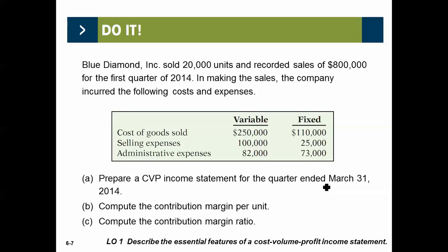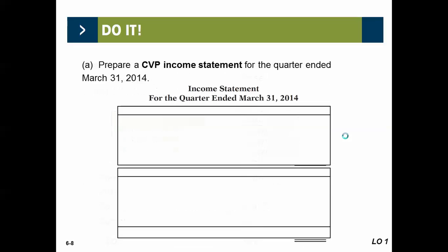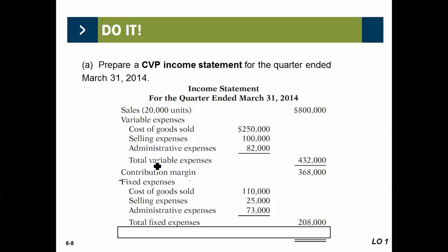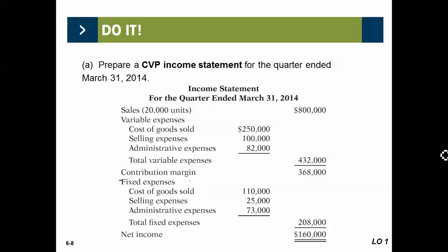Until you put data like this into a CVP format, you don't see the contribution margin and can't use it to predict. We start off with sales of 20,000 units. Variable costs total $432,000 — that's cost of goods sold, selling, and administration combined total variable. Contribution margin: $800,000 sales minus the variable cost. That's not profit — it contributes first to fixed cost. The fixed costs are $208,000. Once the $368,000 contribution covers the fixed cost of $208,000, the profit is $160,000. That's how you reformat that statement.